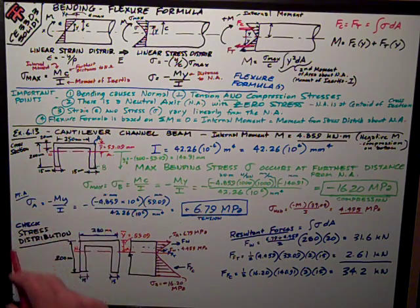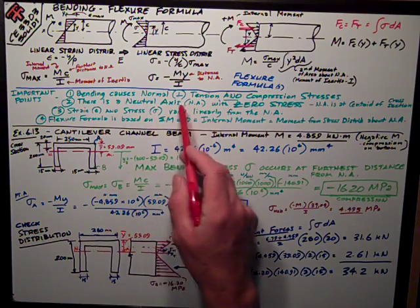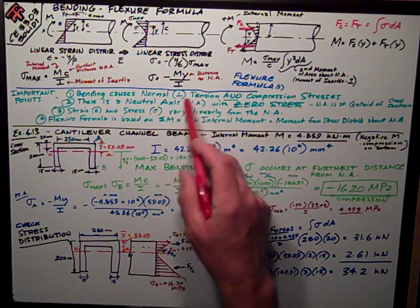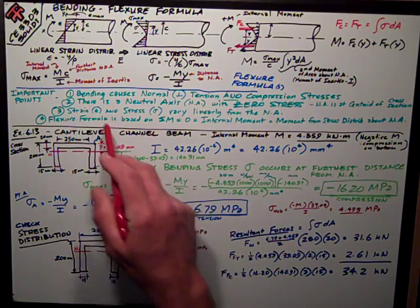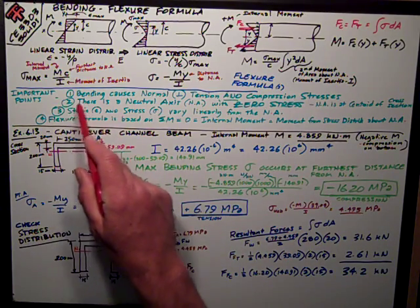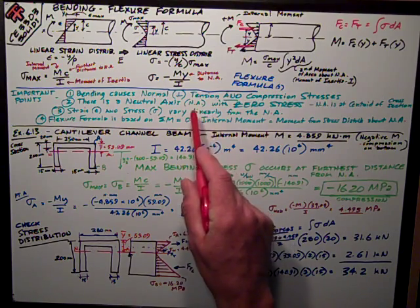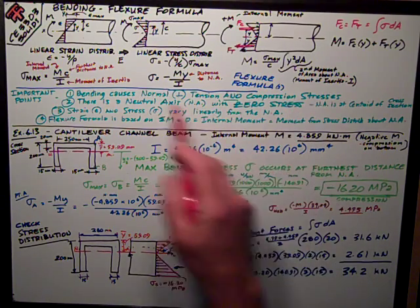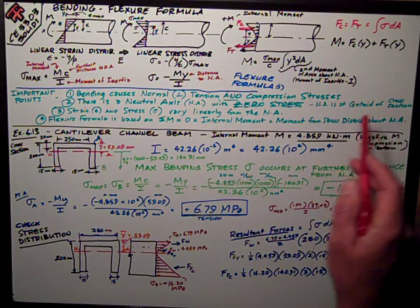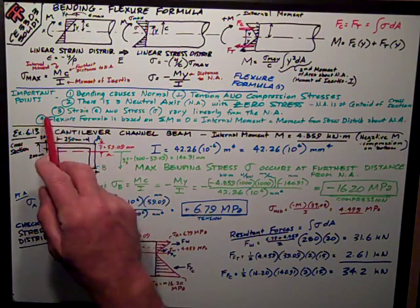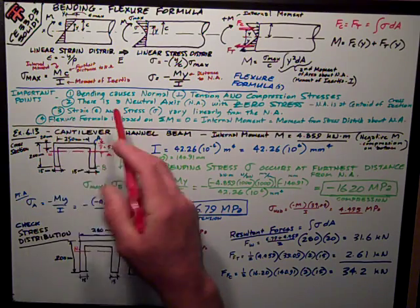The important points to note about bending are the bending causes a normal stress, a tension and a compression stress. Point number two is there is a neutral axis, NA is how we're going to abbreviate it, with zero stress. It's right there in the center. The neutral axis is at the centroid of the cross section, which is just a geometric property.